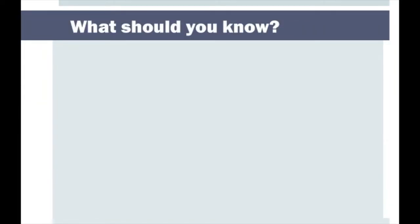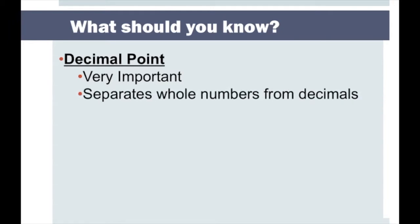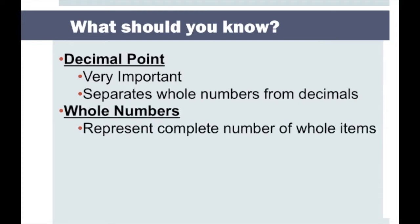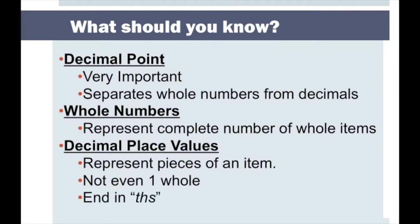So what should you know? You should make sure that you know that the decimal point is very important — probably the most important part of decimal place values. It separates the whole numbers from your decimals. Whole numbers represent complete numbers of whole items, and decimal place values represent pieces of an item. Decimals actually represent part of something, whereas a whole number represents an entire amount. Therefore, a decimal place value represents something that is not even one whole. And decimal place values will always end with THS.